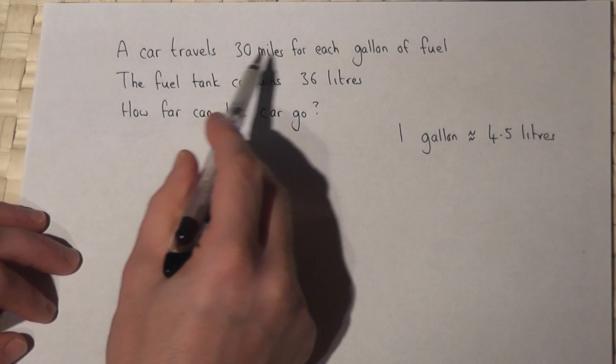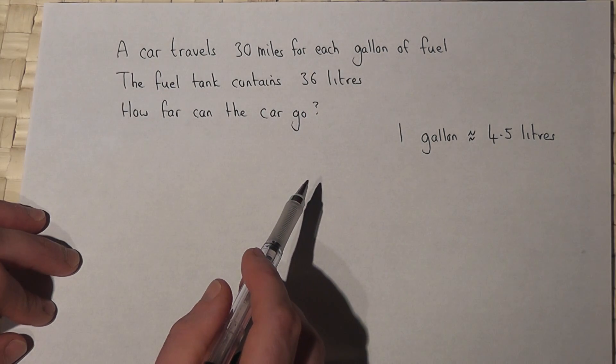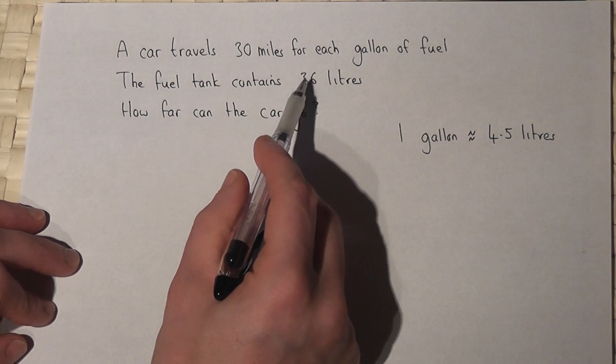Now a car will travel 30 miles for each gallon of fuel, and the fuel tank contains 36 liters.